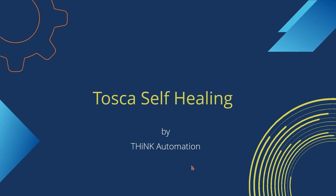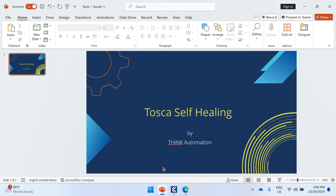Before going into that, let's dive into the topic. What is meant by self-healing? Self-healing is a methodology where if a property is not available for a particular attribute in your module or application or screen, Tosca itself will heal and look for an alternate property using machine learning technologies. Using that, Tosca will identify alternate properties and try to execute your test cases based on that, which helps to reduce your maintenance effort.